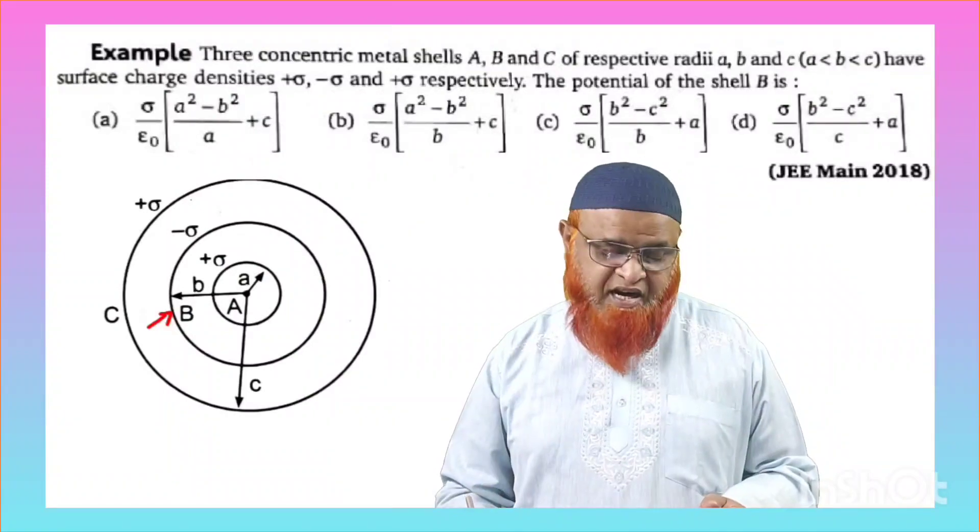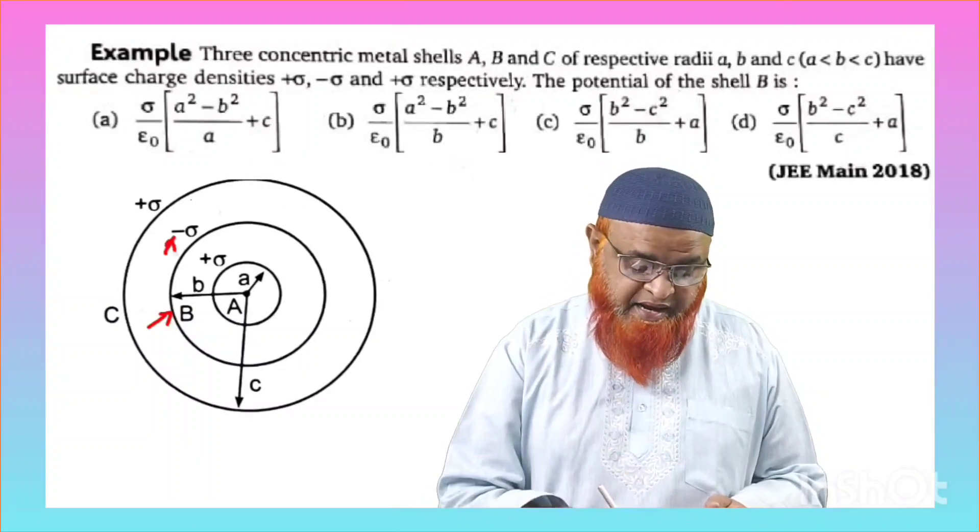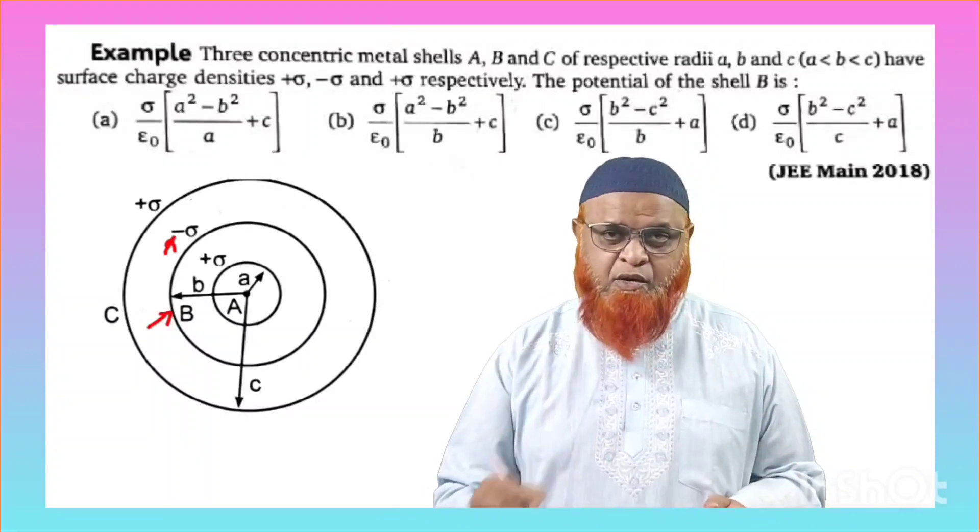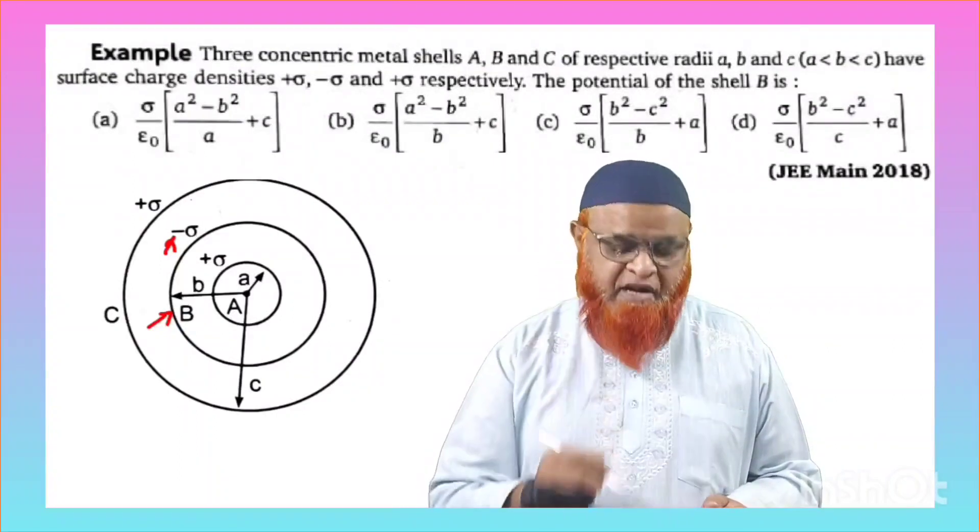So if you are going to find out the second shell, you know that second shell is having negative sign here. Okay, it is having negative sign. That means second shell whose radius is B and B should be negative.